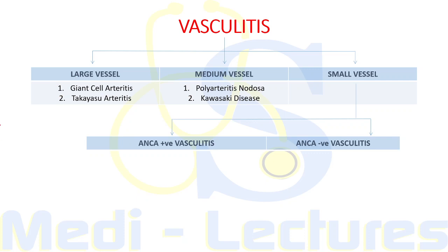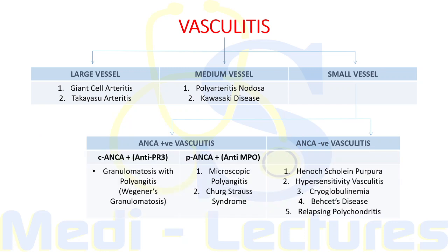Small vessel vasculitis is further subdivided based on the positivity of ANCA — antineutrophilic cytoplasmic antibody. There can be ANCA-positive or ANCA-negative vasculitis. ANCA is further divided into two types: C-ANCA, which gives cytoplasmic staining and is against proteinase-3 (also known as anti-PR3), and P-ANCA, which gives perinuclear staining and is against myeloperoxidase (anti-MPO).